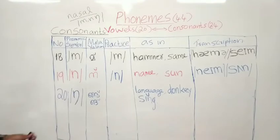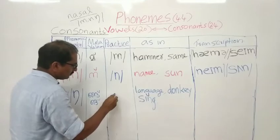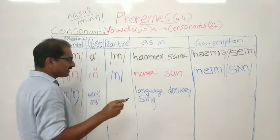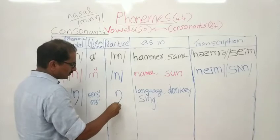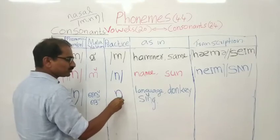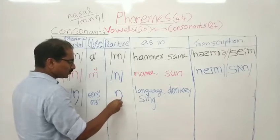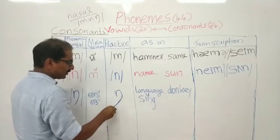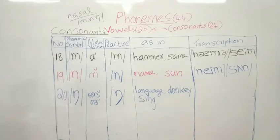The 20th consonant is N. This is written — begin as you write the letter N, then give a long tail. Like this — N. Once again, look at here: up to this position this is the small letter N, then go to this position like a tail. That is N. As in 'language', as in 'donkey'.